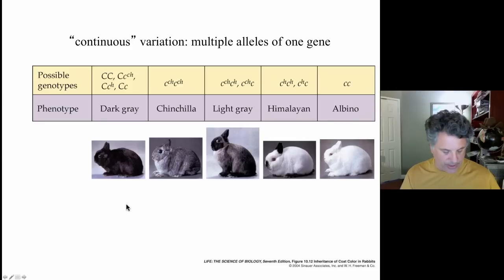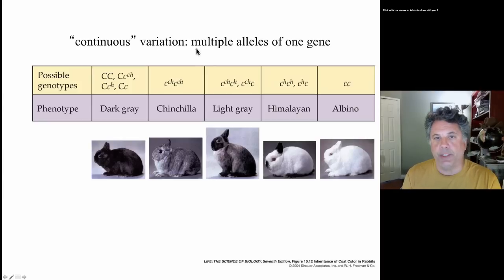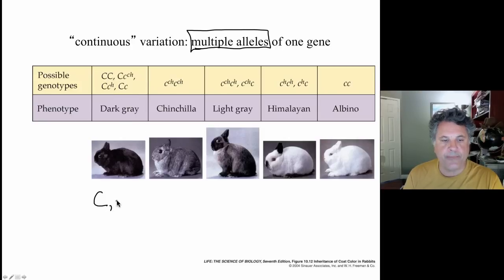Another source of continuous variation — again not a contradiction of Mendelian inheritance — involves multiple alleles. Here we're looking at a single gene with multiple alleles, all affecting a particular phenotype. In this case we're looking at coat color in rabbits. We have four alleles: big C, little c, little c superscript H for Himalayan, and little c superscript CH for chinchilla.